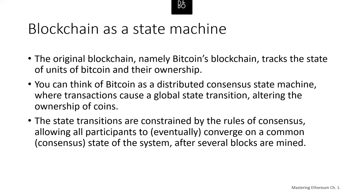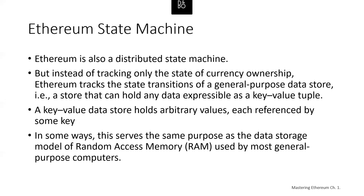Let's talk a little more about Ethereum as a general purpose blockchain. The original blockchain — Bitcoin's blockchain — tracks the state of units of Bitcoin and their ownership. You can think of Bitcoin as a distributed consensus state machine where transactions cause a global state transition altering who owns what coins. The state transitions are constrained by the rules of the decentralized consensus model, allowing all participants to eventually converge on a common consensus state after several blocks are mined. Ethereum also tracks state transitions, but of a general purpose data storage — a data store that can hold any data expressible as a key-value pair.